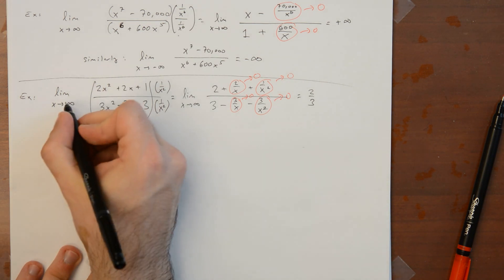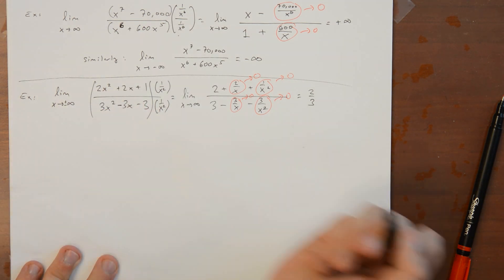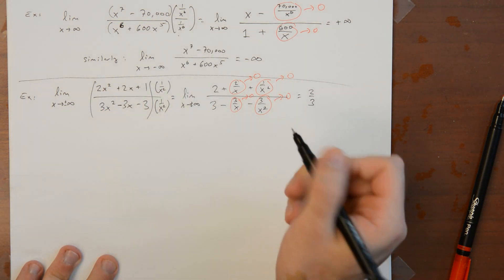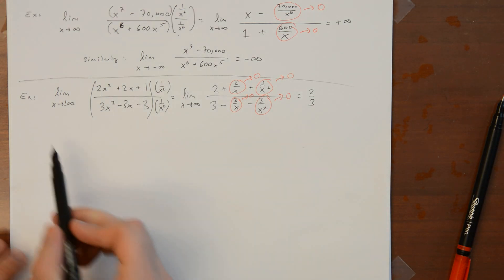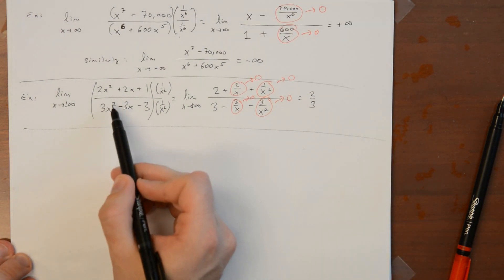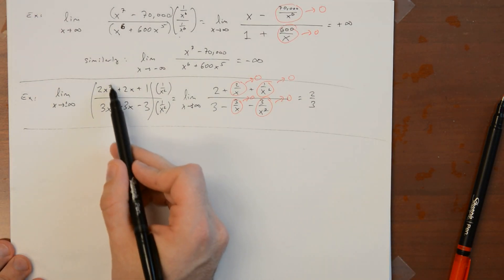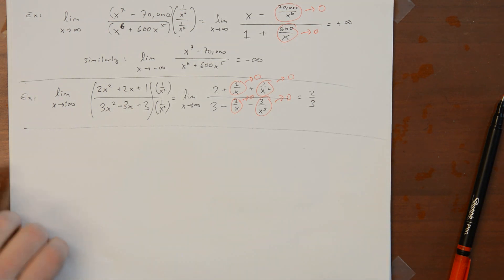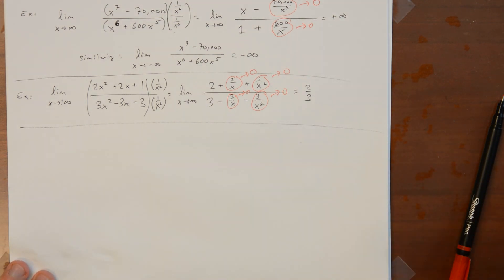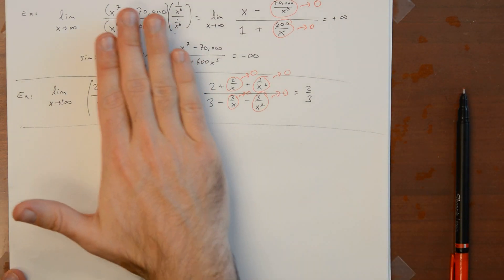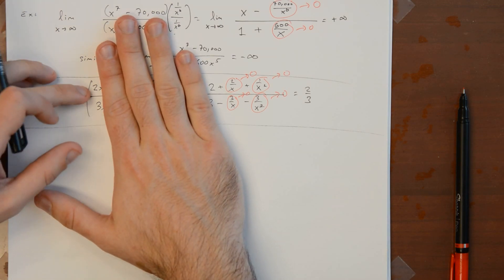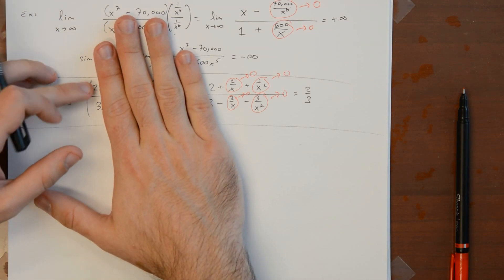The same argument works as x goes to negative infinity. This is what happens whenever the powers of x are tied — if the highest power of x in the numerator matches the highest power in the denominator, they're running towards infinity at the same rate. All the lower terms don't really add anything, and you get the ratio of the leading coefficients.